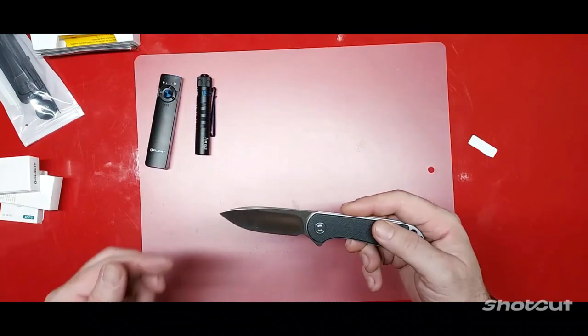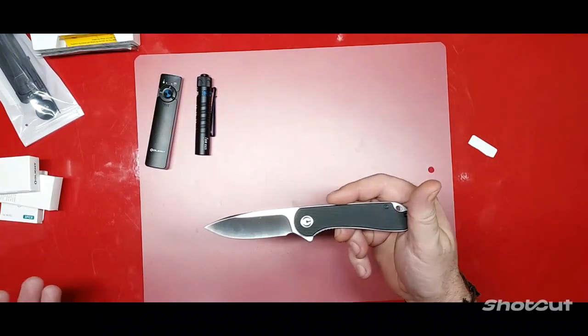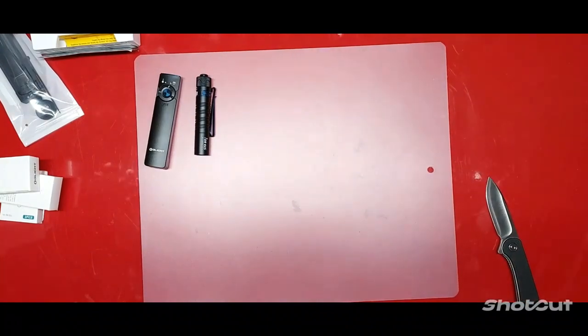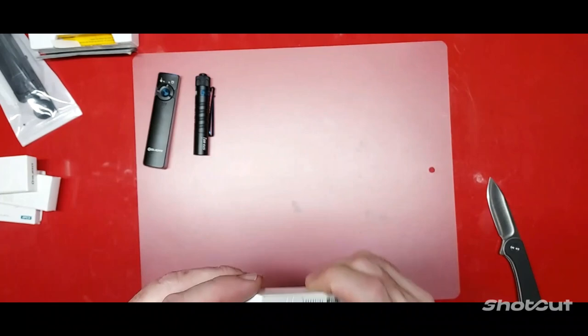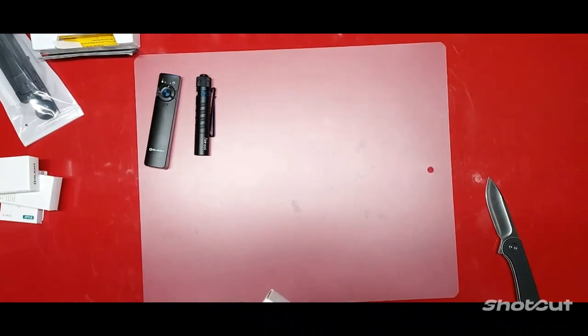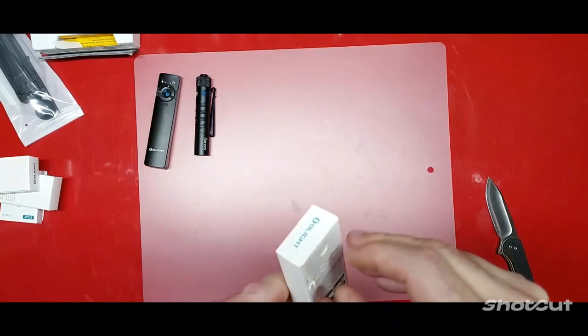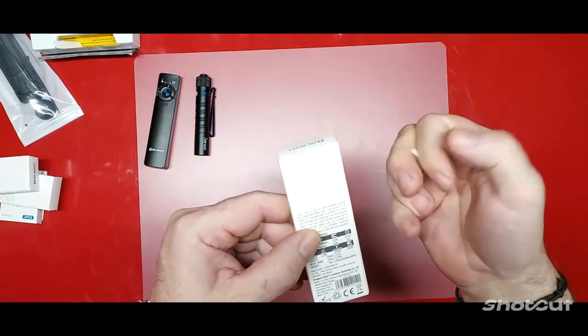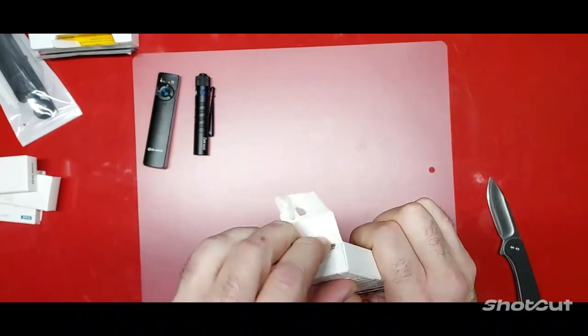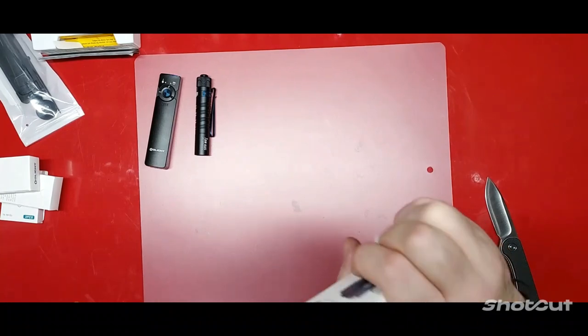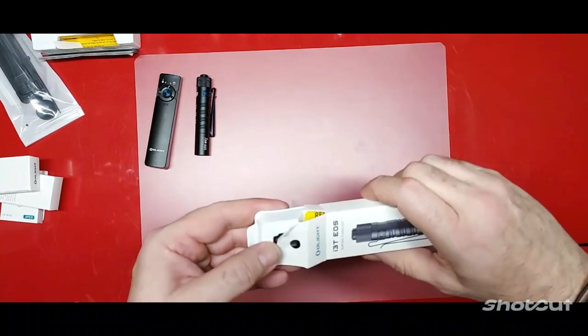I know somebody's going to ask in the comments down below, yeah it's a Civivi Elementum, just a basic one. I know, this is average gear review guys. If somebody wants to send me a Microtech I'll use that to open boxes. And let's look at the i3T. The i3T EOS. It's a little bit slimmer version. Oh see, this is how dumb I am, couldn't even figure out how to open the box on the other one. Sweet, smooth packaging. It's the Olight experience. I always screw this up, I never know which side's up.